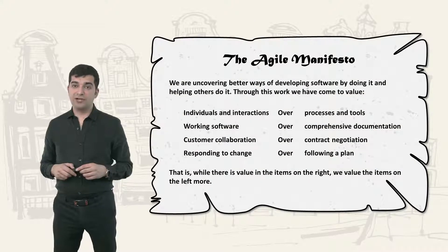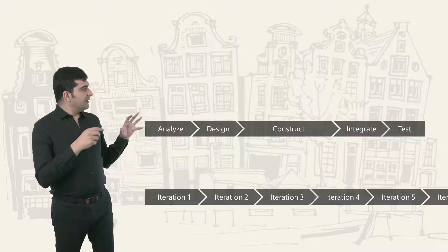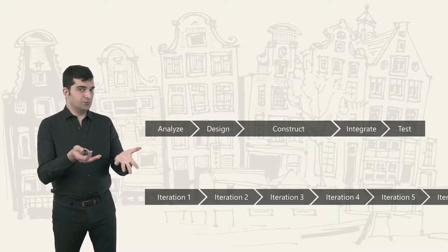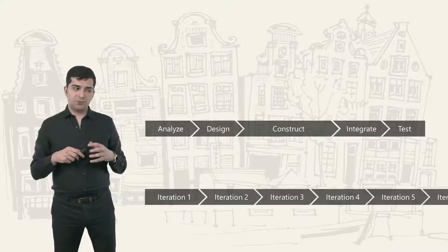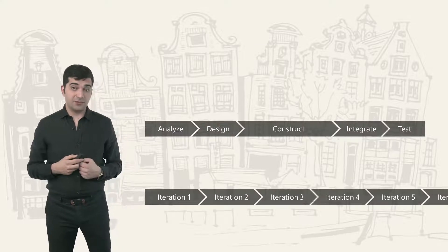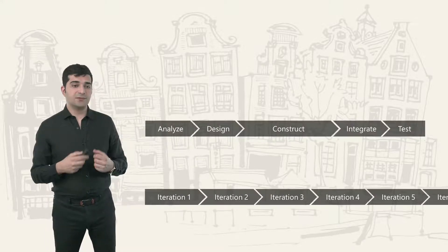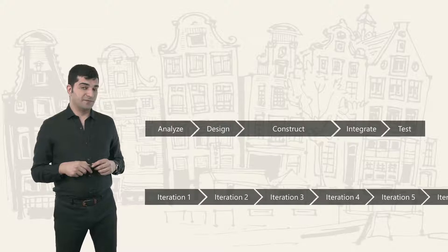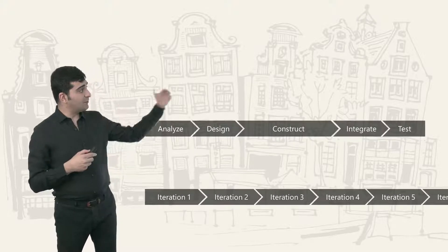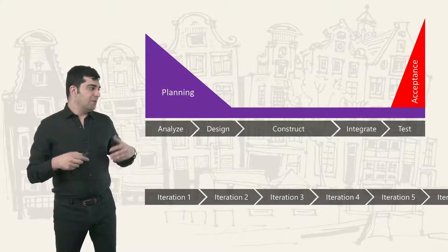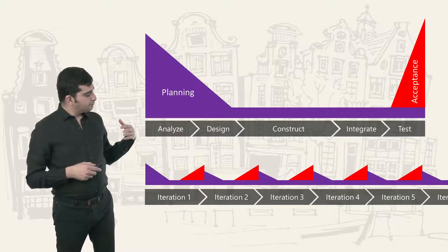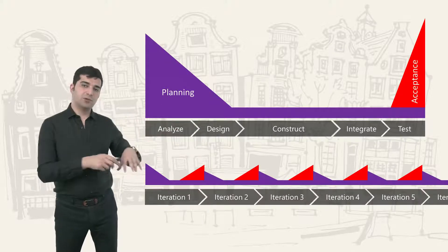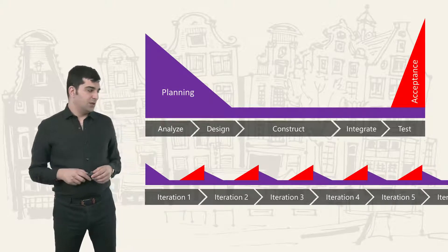The third value is customer collaboration over contract negotiation. In a predictive system, we usually don't have increments during the project, so we don't have something to show the customer. We have deliverables, but most customers don't understand or can't experience them — and end users, who are a great source of feedback, certainly can't. So all acceptance happens at the end of the project, leading to many problems. But in adaptive projects, it's done in every iteration — gradually, but more prominently at the end of each iteration.